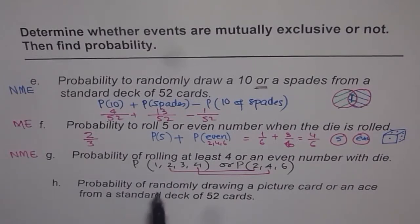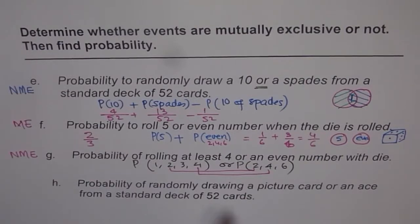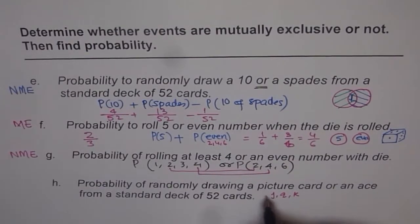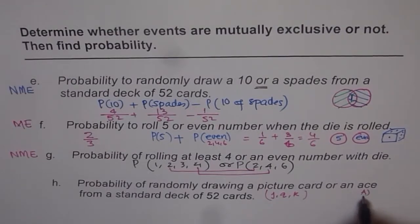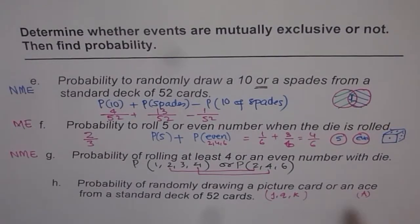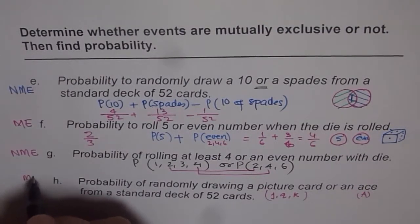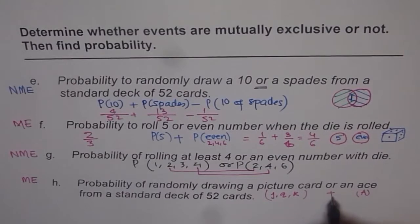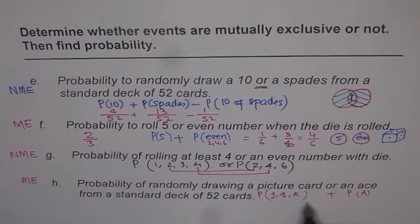Part H: probability of randomly drawing a picture card or an ace from a standard deck of 52. In a standard deck, the picture cards are jack, queen, and king. Ace is a separate card type. There is nothing common between picture cards and aces, so these two events are mutually exclusive — like two completely separate sets. Therefore, the probability is simply the sum of their individual probabilities: probability of a picture card plus probability of an ace.